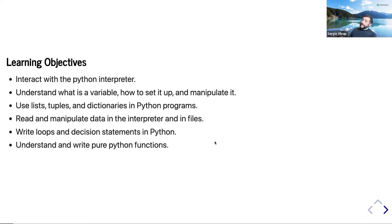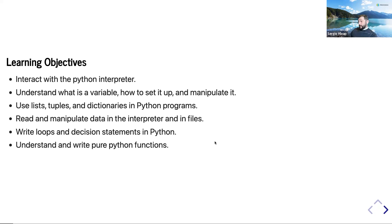The learning objectives for this part are: interact with the Python interpreter — I recommend having a second screen or tab with a Python interpreter or with the notebooks in Posit Cloud. We're going to understand what a variable is, how to set it up and manipulate it. We'll cover data structures like lists, tuples, and dictionaries, how to read and manipulate data in Python, loops, and how pure functions work.